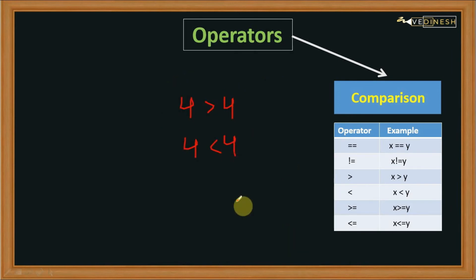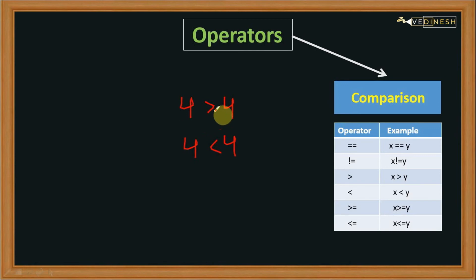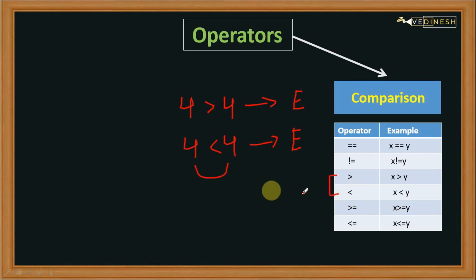Now I have a question for you. Here we are using the greater than operator and here we are using the less than operator, and the values of LHS and RHS are the same. What is the output of these statements? The output would be an error, because these operators cannot compare two equal values — greater than and less than will fail when the values are the same.